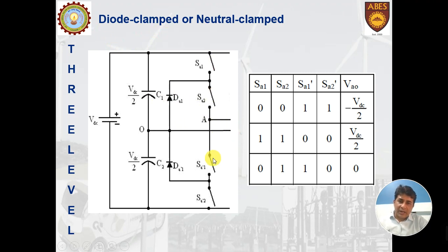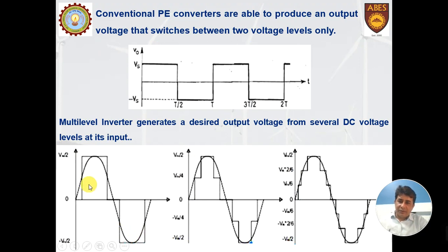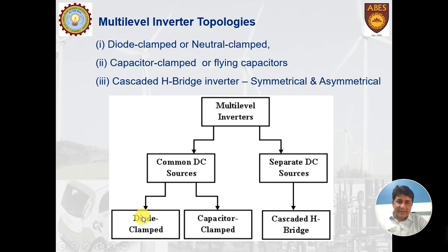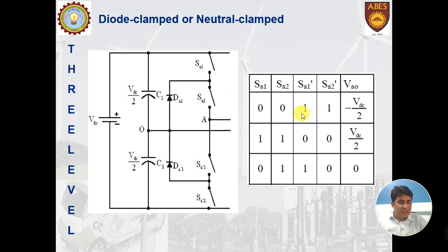There are four switches: SA1, SA2, SA1′, and SA2′. By suitable switching of these four switches we can have three levels at the output: zero, VDC/2, and minus VDC/2. A switching matrix shows the pattern: zero means the switch is open, one means the switch is closed.